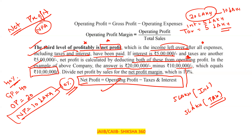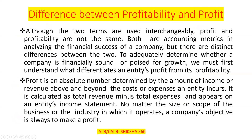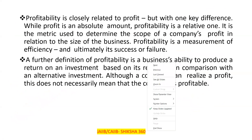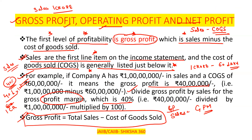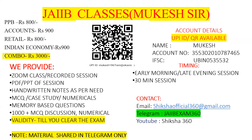Now it should be clear what the difference is between gross profit, operating profit, and net profit — very important concepts. All banks will release their annual balance sheets, and a short video will cover the balance sheet of a company discussing net NPA, gross NPA, net profit, gross profit, and operating profit. Other methods like return on assets and return on equity will also be shared. Thanks to all of you for joining this discussion.